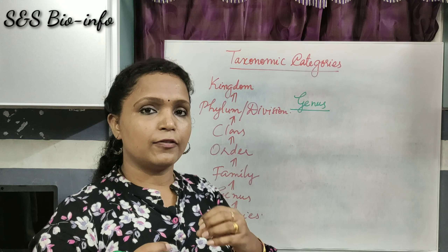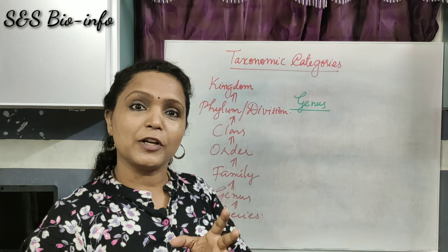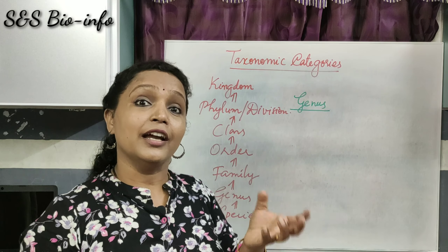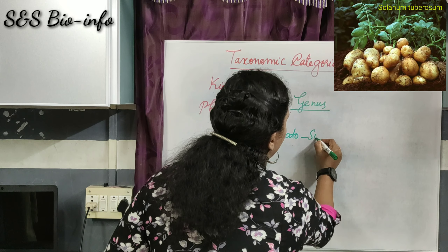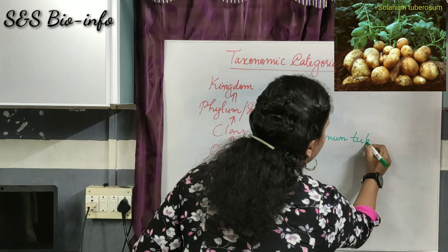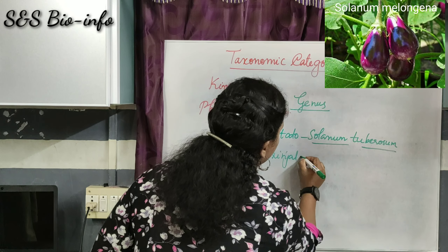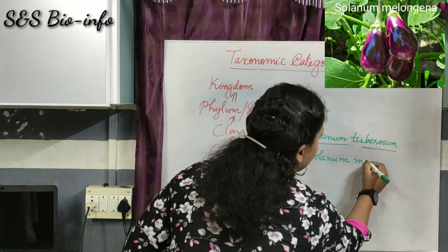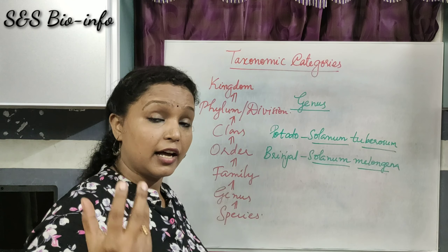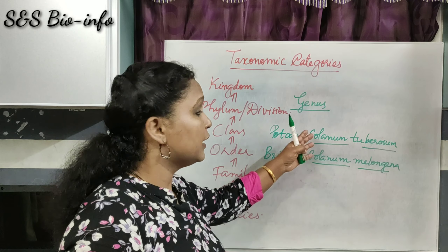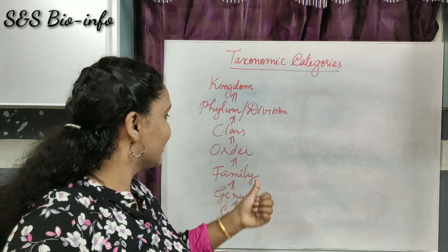Another example from plants: potato and brinjal are two vegetables. They are closely related species — morphologically they are totally different, but they come under the same genus Solanum. The scientific name of potato is Solanum tuberosum and of brinjal is Solanum melongena. They have similarities in anatomical features, reproductive features, and floral patterns, which is why they come under the same genus Solanum.